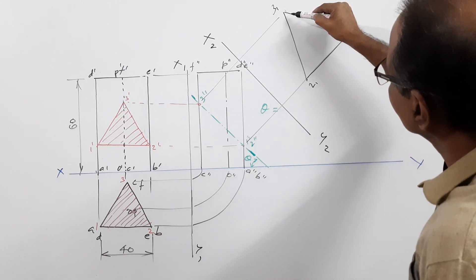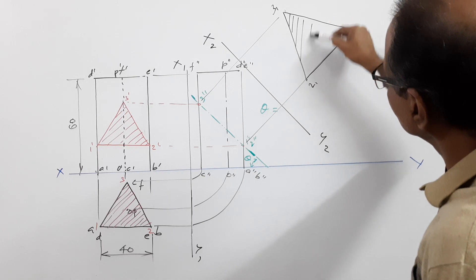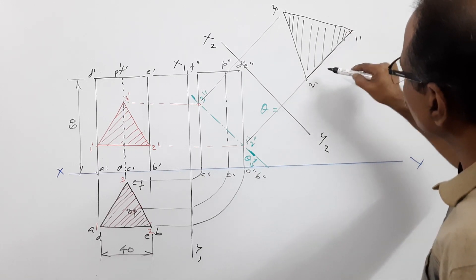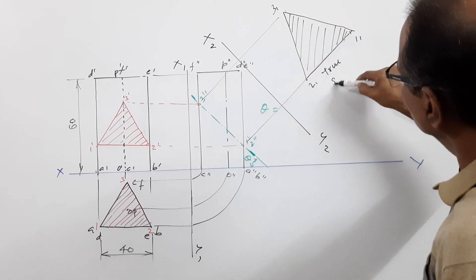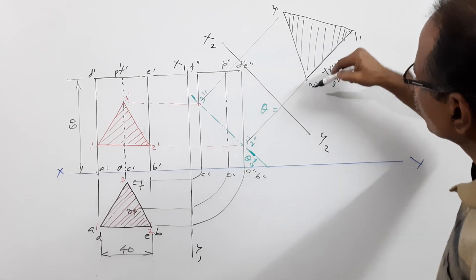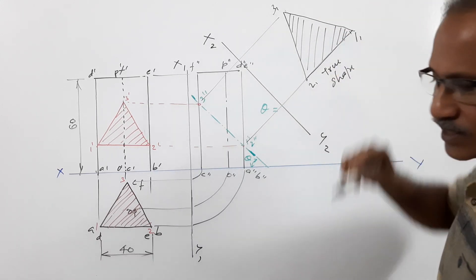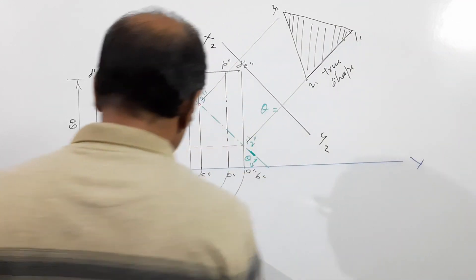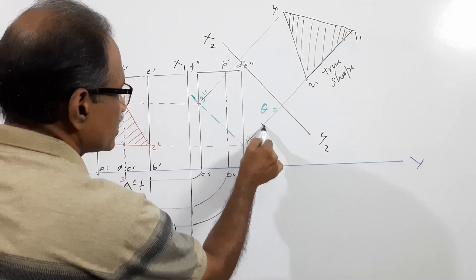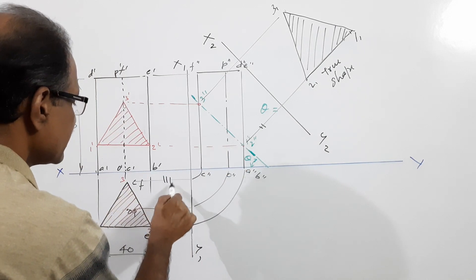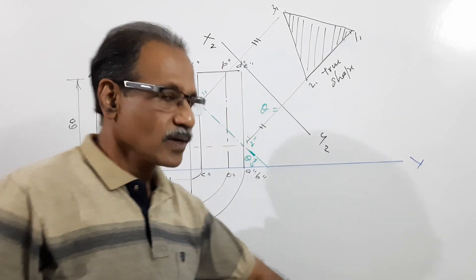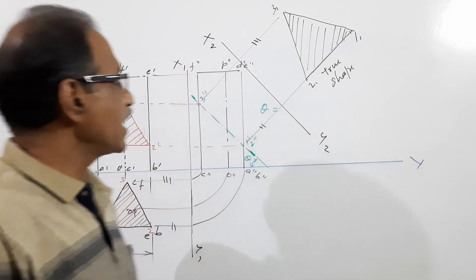Connect the points and this gives the true shape. This distance in the true shape is equal to this distance in the plan, and this distance is equal to this distance. I hope you understand.